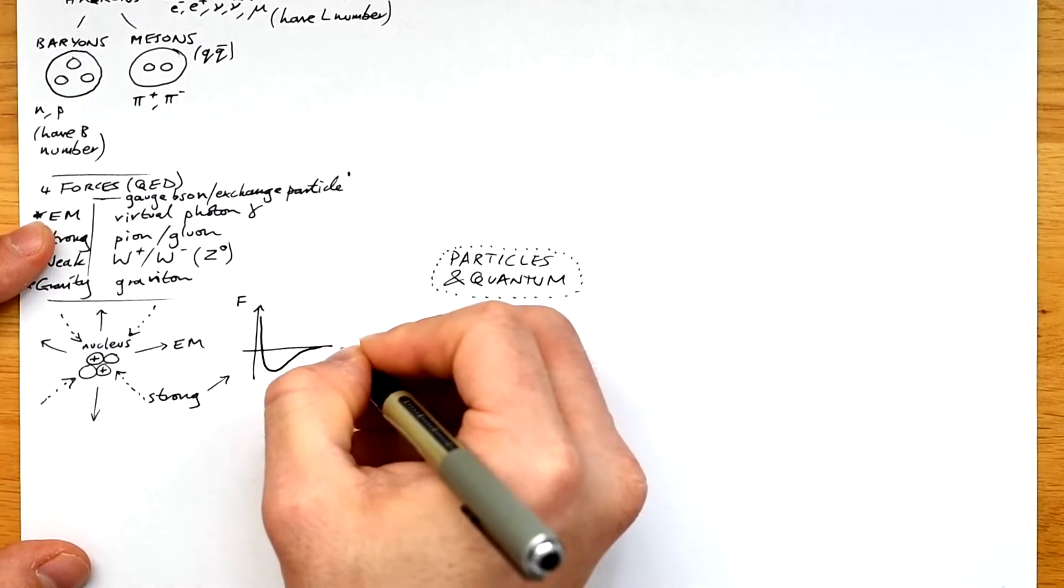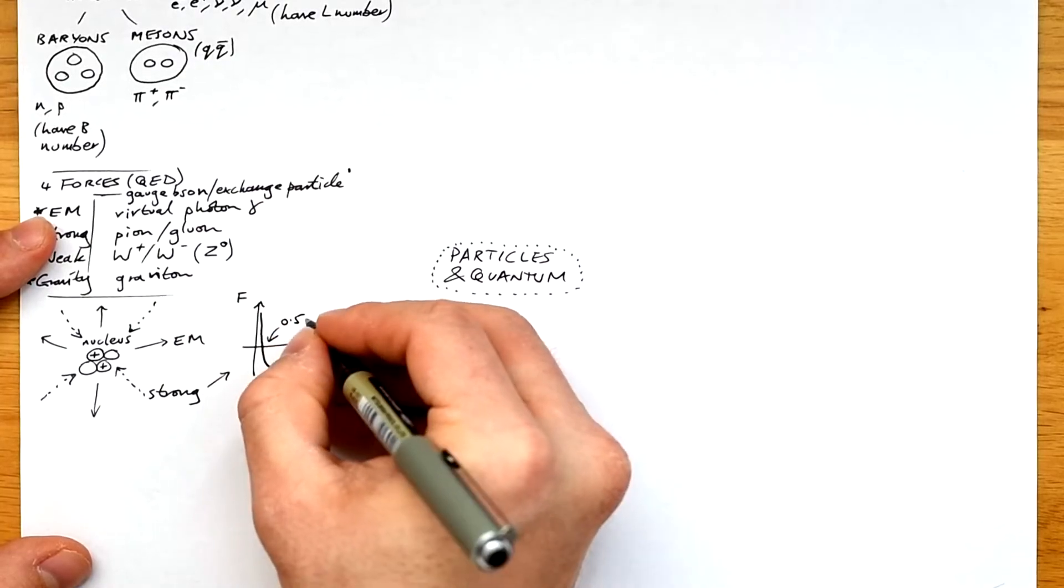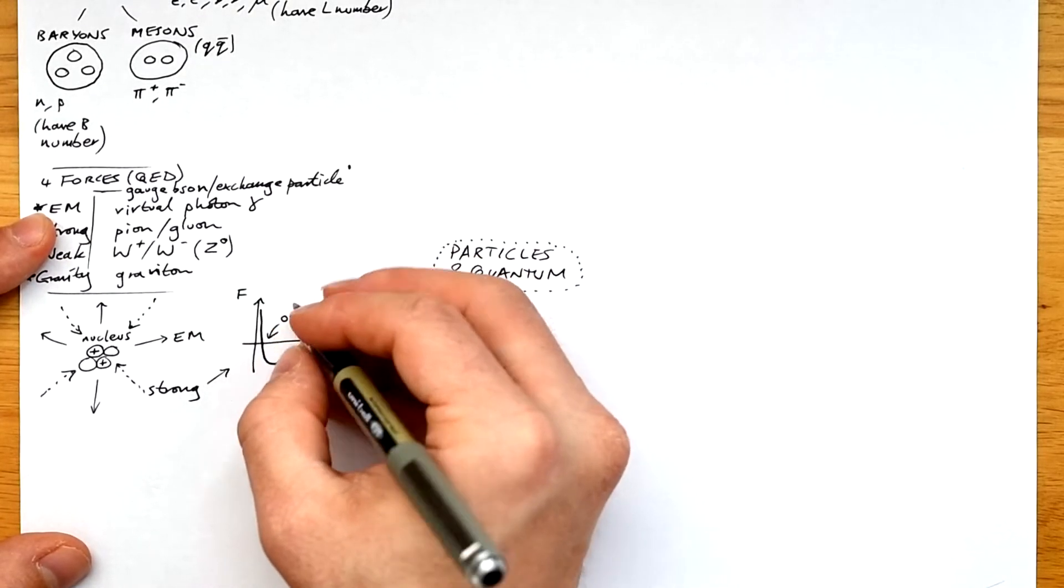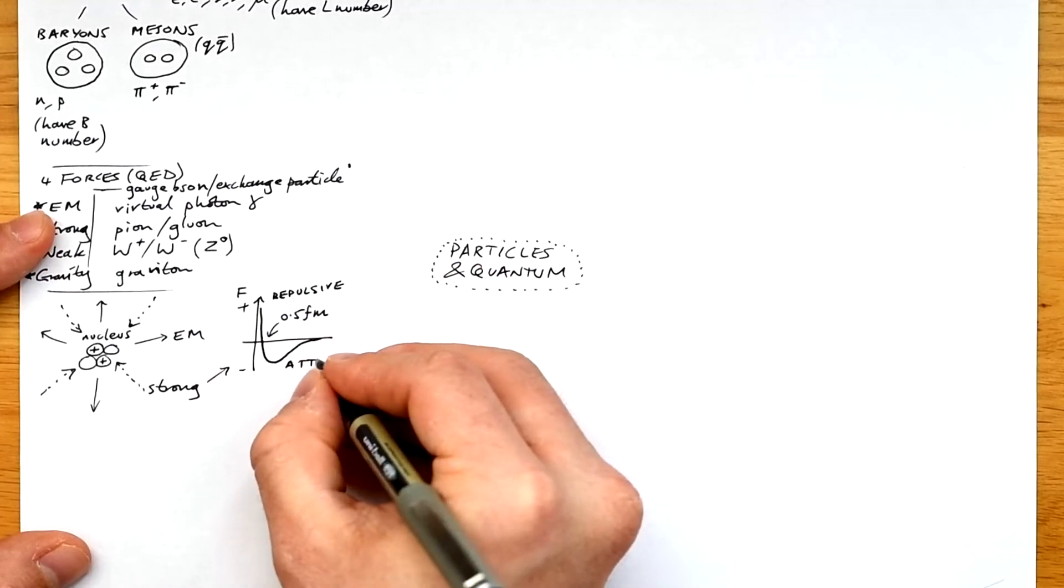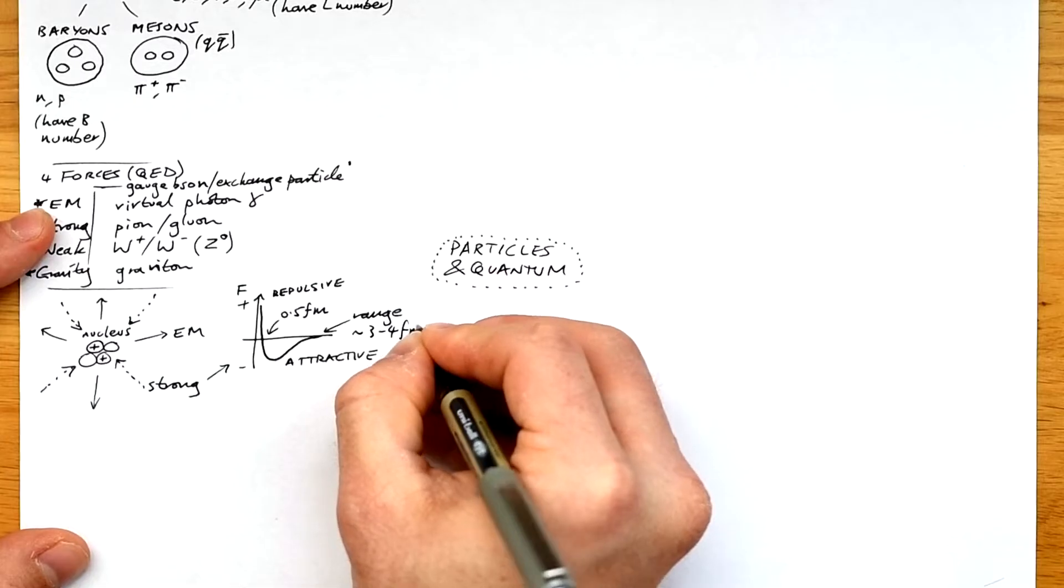What's stopping the strong nuclear force from imploding a nucleus then? Well, what we say is when the nucleons get too close together to 0.5 femtometers, the strong nuclear force flips from being attractive to repulsive. And the range of attraction for the strong nuclear force is about three to four femtometers.